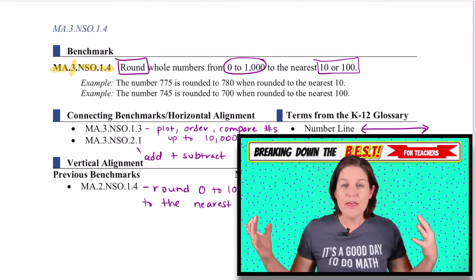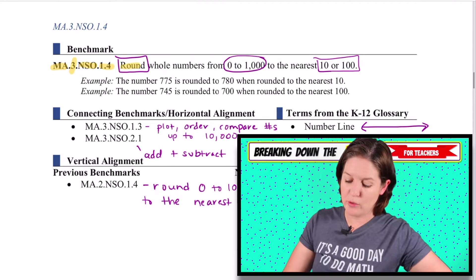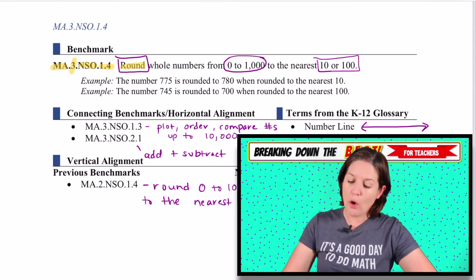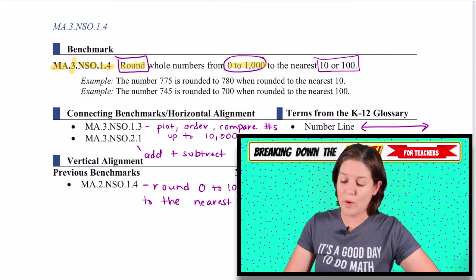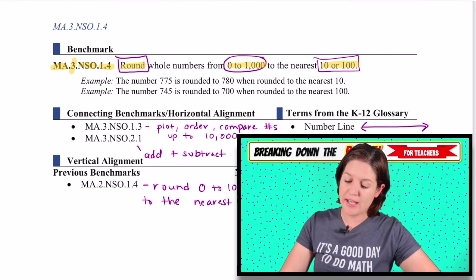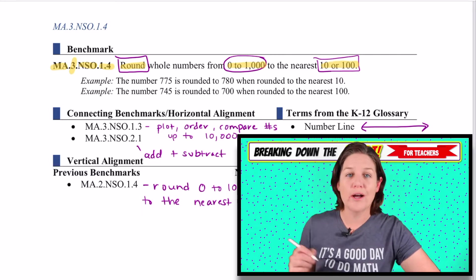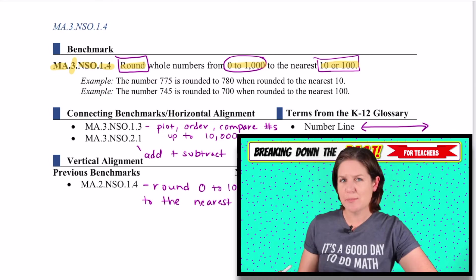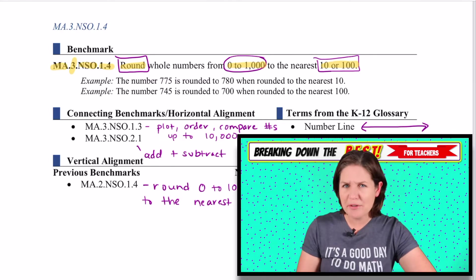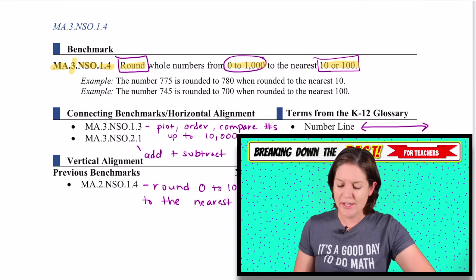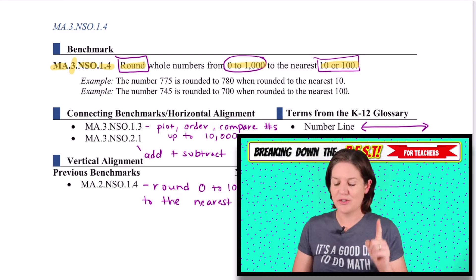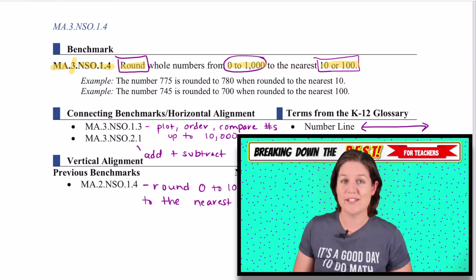This one is all about rounding. We're rounding whole numbers from zero to 1000 to the nearest 10 or 100. This is actually really similar to where we're coming from with the common core standards, but there is a difference in terms of what is expected.